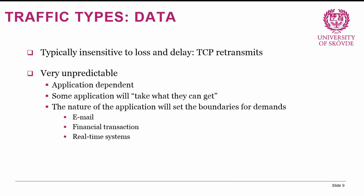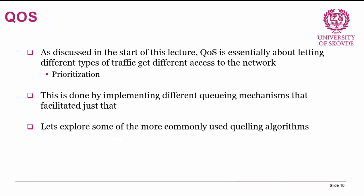Now that we've covered traffic types and the problems with providing quality for different types, let's look at quality of service in more detail. QoS is about letting different types of traffic get different access to the network using prioritization. This is done by implementing different queuing mechanisms. Instead of letting all applications grab whatever resources they can, we use algorithms to mark traffic by type and then queue it accordingly. Let's explore the commonly used queuing algorithms.